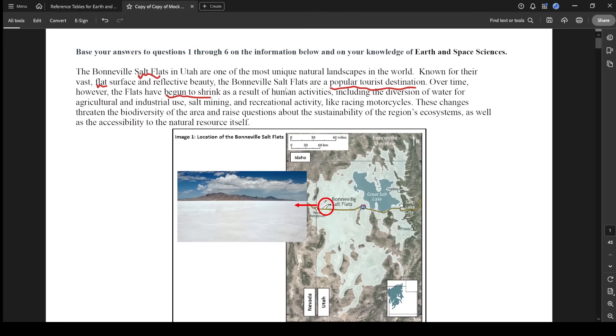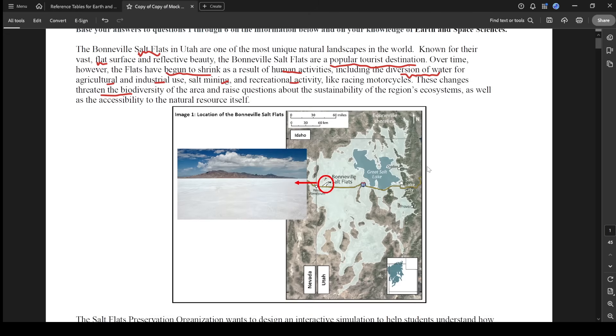They've begun to shrink as a result of human activities, including the diversion of water, which means they're changing the direction of water for agriculture and industrial use, salt mining and recreational activity like racing motorcycles. These changes threaten the biodiversity of the area and raise questions about the sustainability of the region's ecosystems as well as the accessibility to the natural resource itself. So essentially there's a map here and there's these salt flats and human impact is wrecking the area.